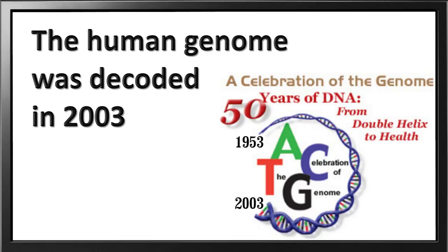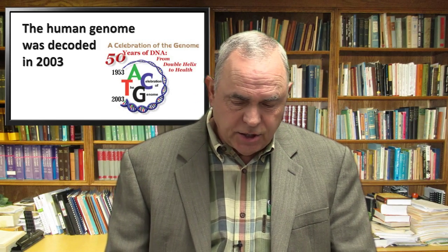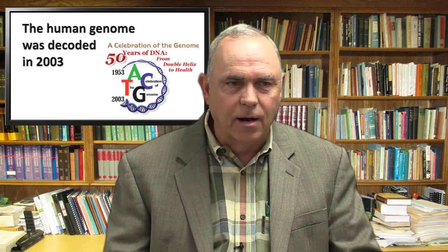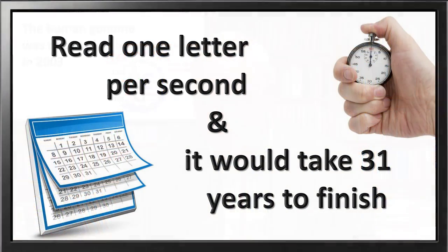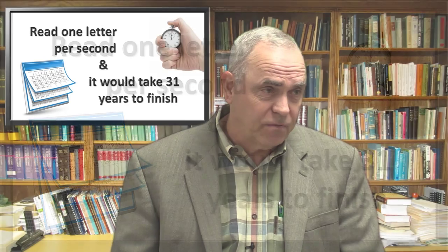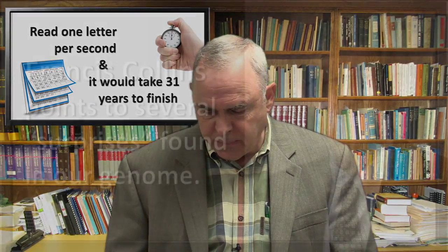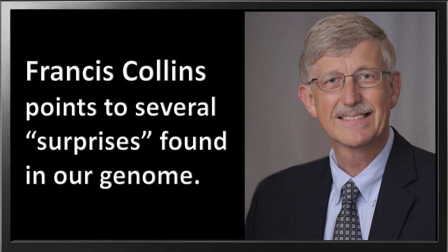The human genome was decoded in 2003, so we've known about it for about 10-11 years now. The chimpanzee genome was decoded around 2005. The human genome is extremely extensive — if you were to read one letter of the human genome, one base pair, taking one second per letter, it would take you 31 years to finish. It's very complex and very detailed.